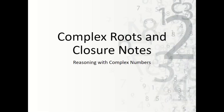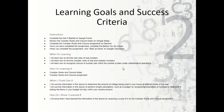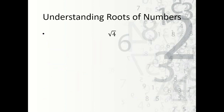Let's take a look at the complex roots and closure notes. Understanding the roots of numbers: if I were to ask you what is the square root of 4, most of you would say 2. But we forget sometimes that there are two roots. Anytime we're taking the second root, there are two roots that exist — negative 2 and positive 2 — because negative 2 times negative 2 is also equal to 4.